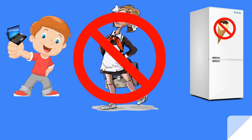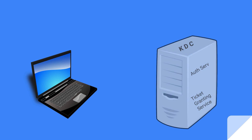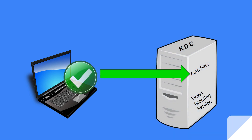Kerberoasting is only possible with authenticated network users, or a network user account that has been compromised by an attacker who now has control of an internal user's account. Kerberoasting can be done by any low-level network user, and here's how it works.